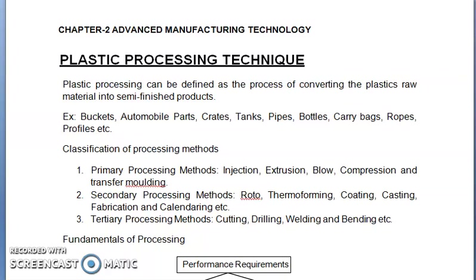The classification of plastic processing methods. The first one is primary processing method, then secondary processing method, and tertiary processing method. Primary processing methods include injection, extrusion, blow, compression, and transfer molding. Secondary processing methods include roto-molding, thermoforming, coating, casting, fabrication, and calendaring, etc. Tertiary processing methods are cutting, drilling, welding, and bending, etc.